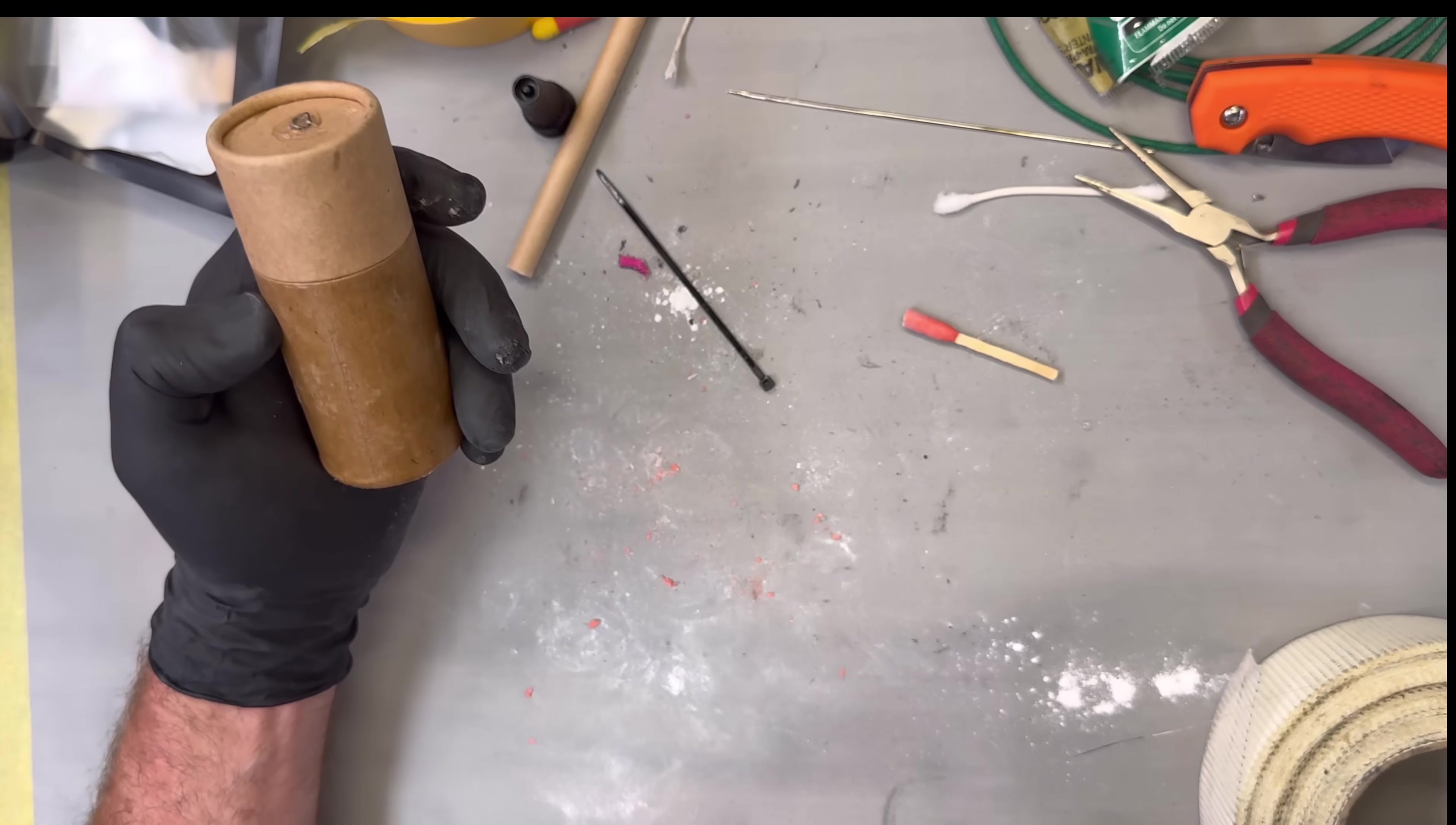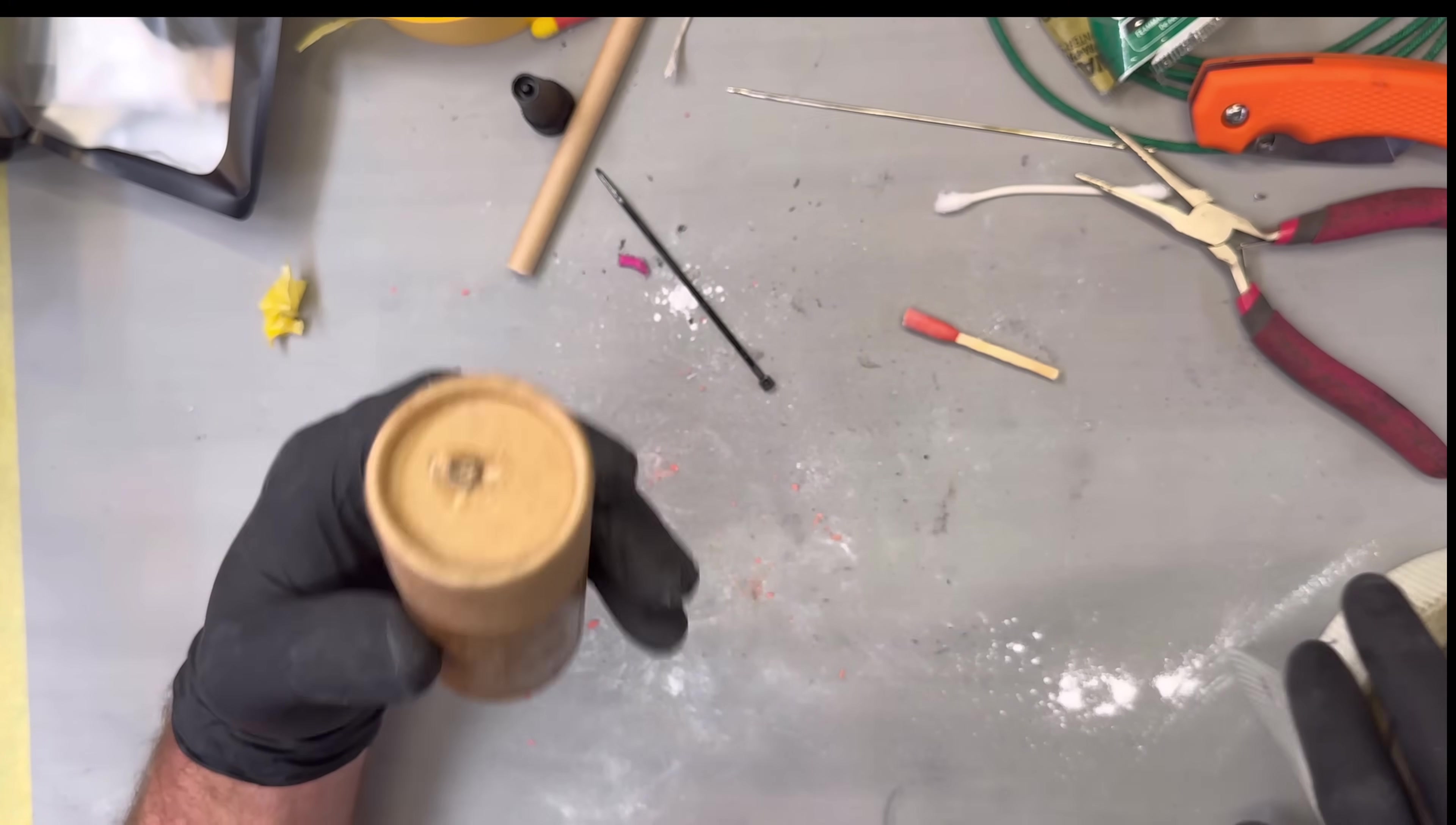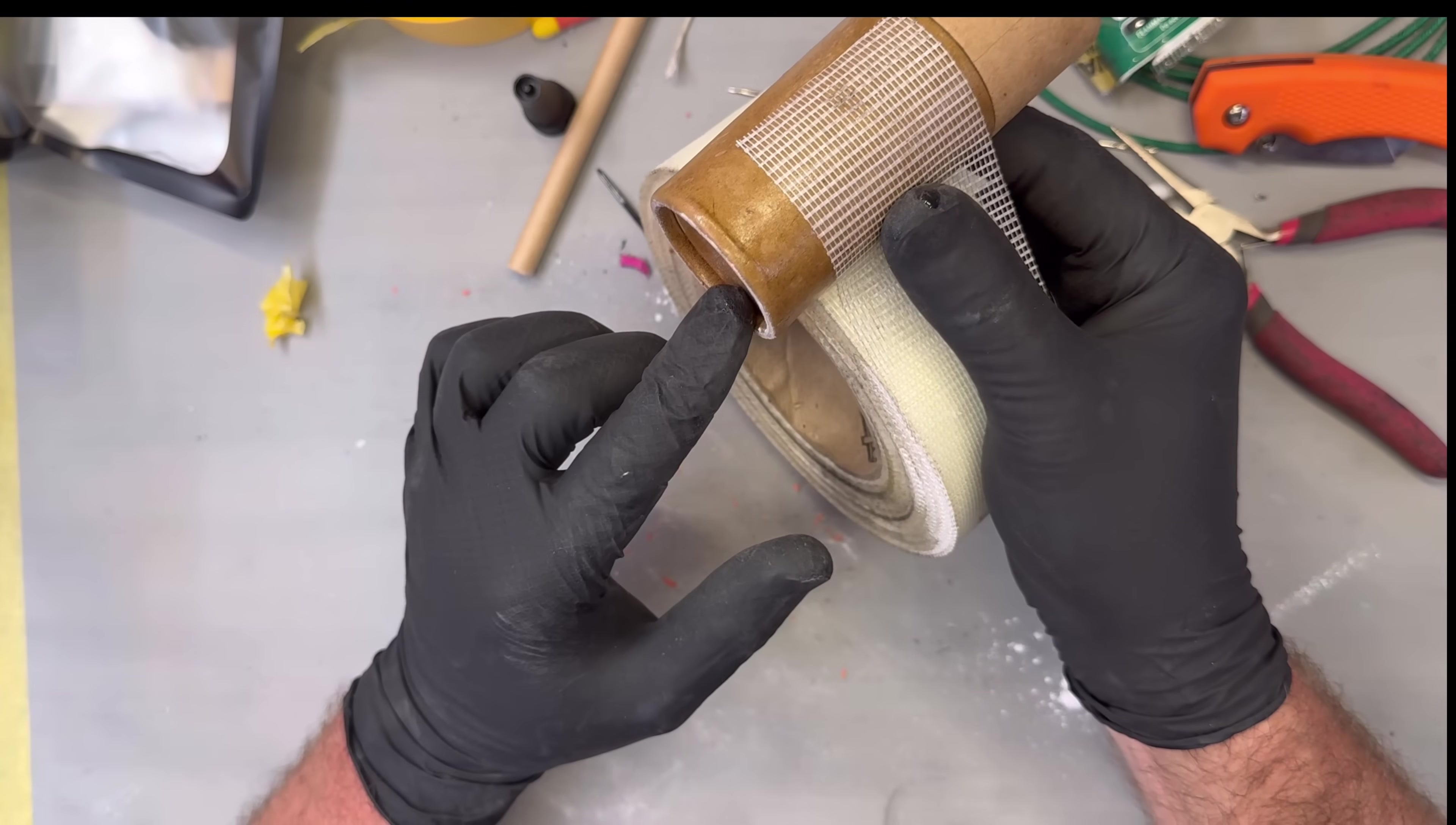This is an important step because this is a cheapo Amazon tube. This is not a proper tube for a smoke grenade that has to withstand any pressure.